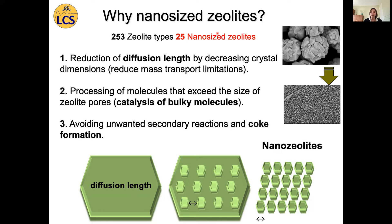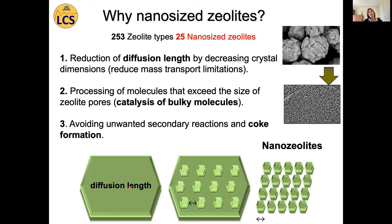Why are we interested in nanosize zeolites? By decreasing the crystal dimension we could substantially reduce the diffusion length and thus reduce mass transport limitations. Also, by decreasing the size of the crystals, we could process molecules much bigger than the pore opening, enabling catalysis of bulky molecules at the external surface of zeolite nanocrystals. We could also avoid unwanted secondary reactions and coke formation due to fast diffusion.